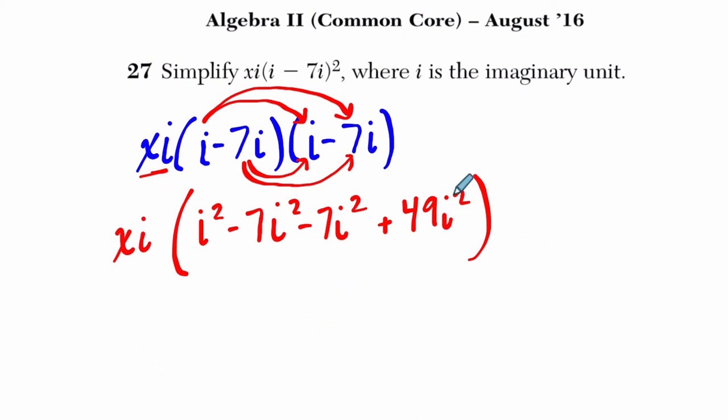If you remember, i equals the square root of negative 1. So that also means that if you square both sides, i squared is equal to negative 1.